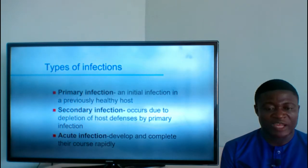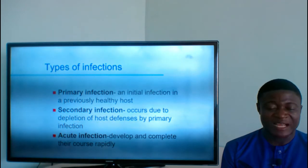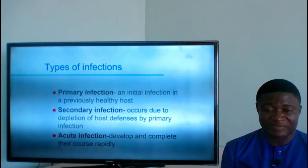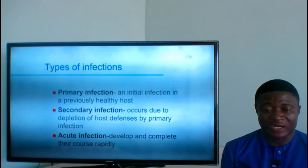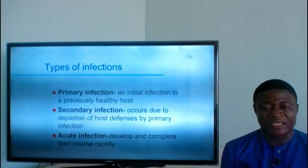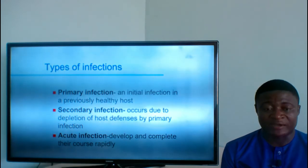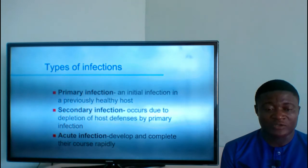Secondary infection occurs due to depletion of host defenses by the primary infection. For example, somebody with HIV-AIDS had no disease before but got HIV-AIDS as a primary infection. The HIV-AIDS suppresses the person's immunity, allowing other conditions like gastroenteritis or tuberculosis to develop. These other conditions — coming as a result of the depleted immunity from the primary infection — are called secondary infections.